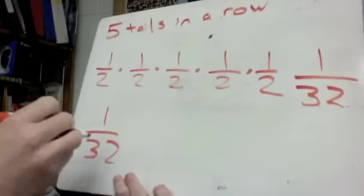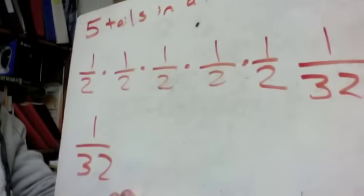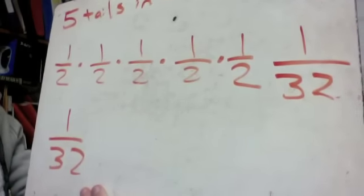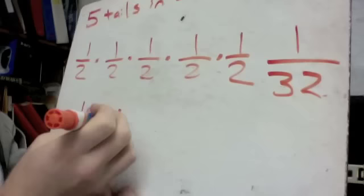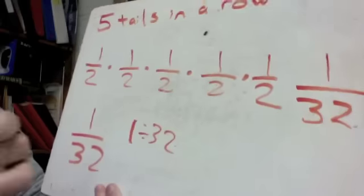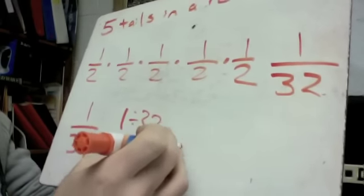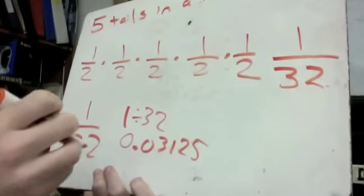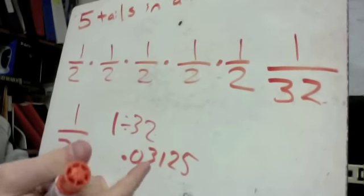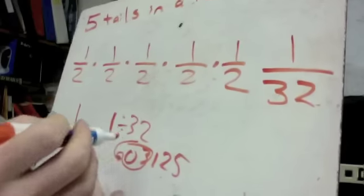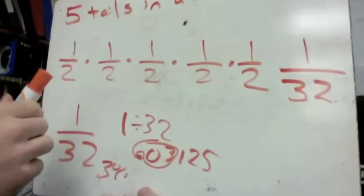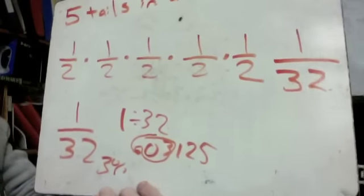Let's figure that out as a percentage. On a calculator, one divided by 32 gives 0.03125. Taking the first two decimal digits, that's a 3% chance of flipping five tails back to back.